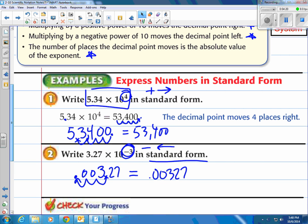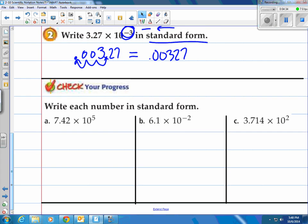So you can see when it's a positive exponent you're gonna end up with a number greater than one. When it's a negative exponent you're gonna end up with a number less than one. You try a couple here. Try these three. Come on back and see how you did.